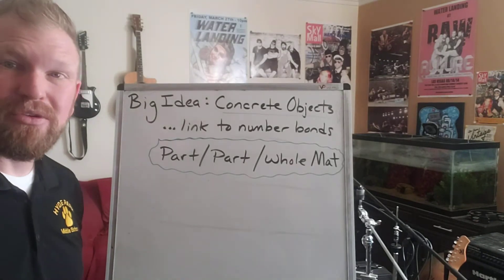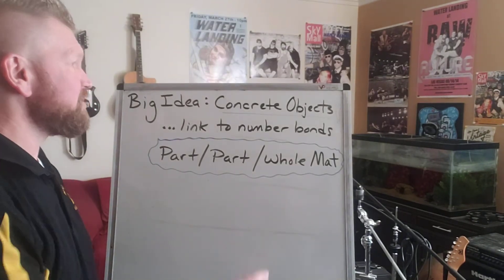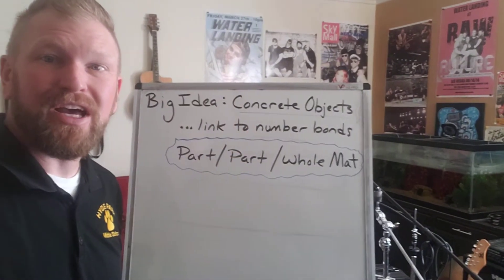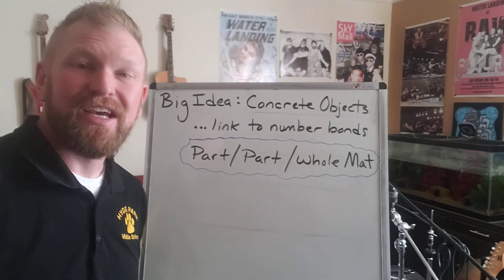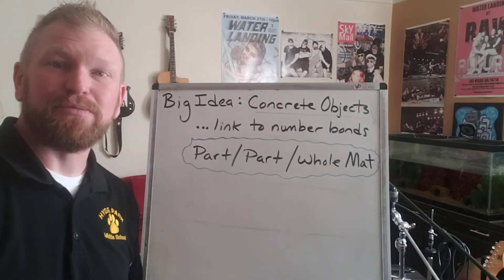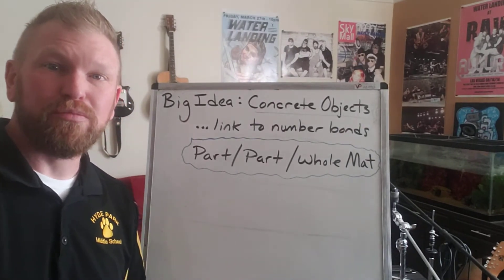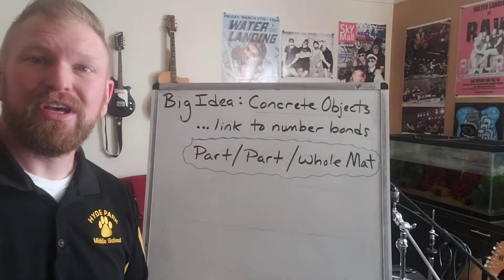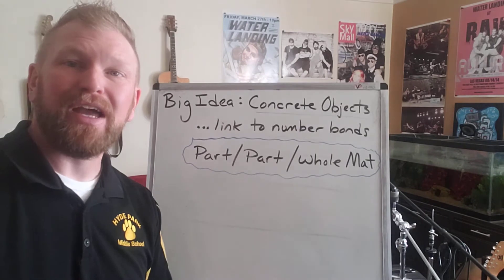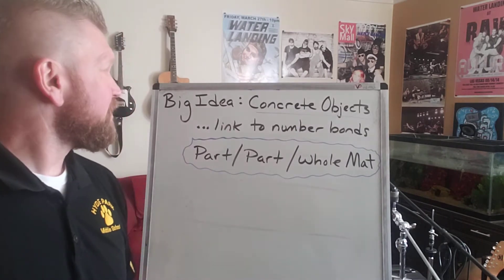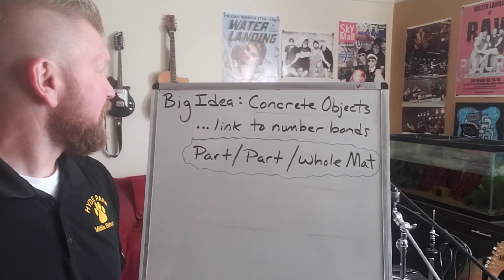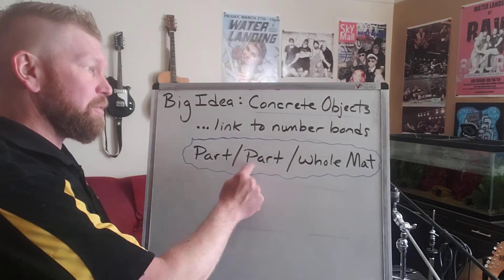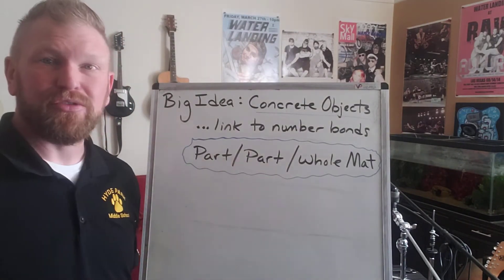The big idea in this question is about concrete objects. We're going to use concrete objects — in this case, cubes — to show numbers that will combine to make seven. And they're going to use a part-part-whole map to do so.